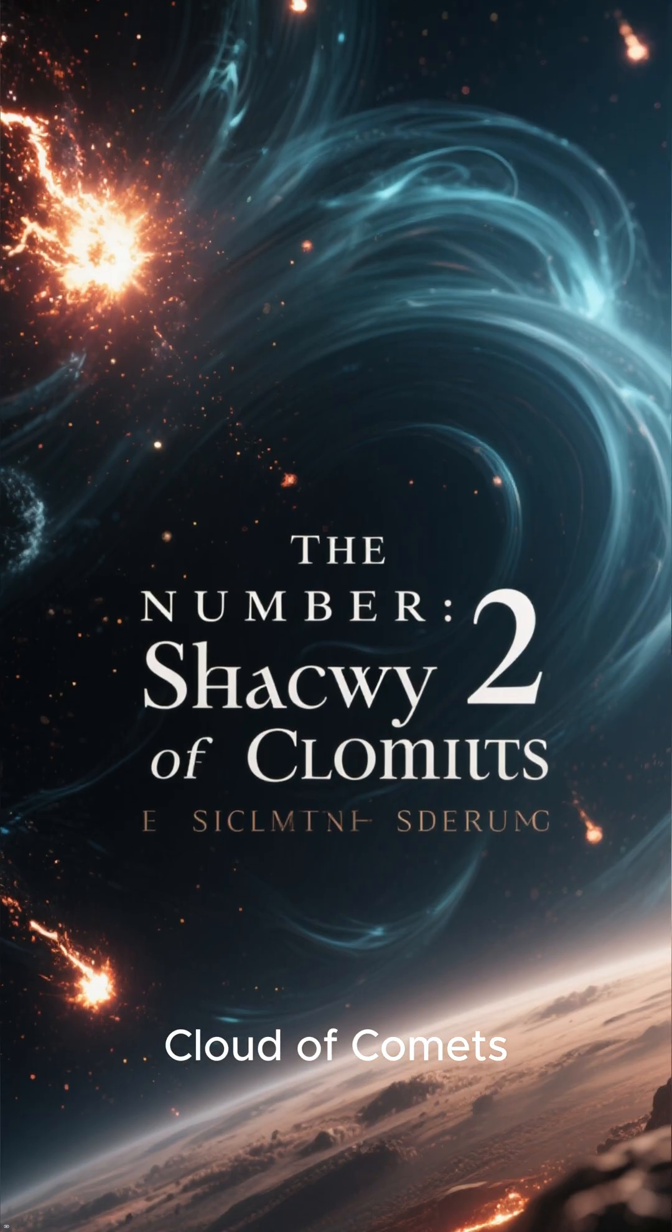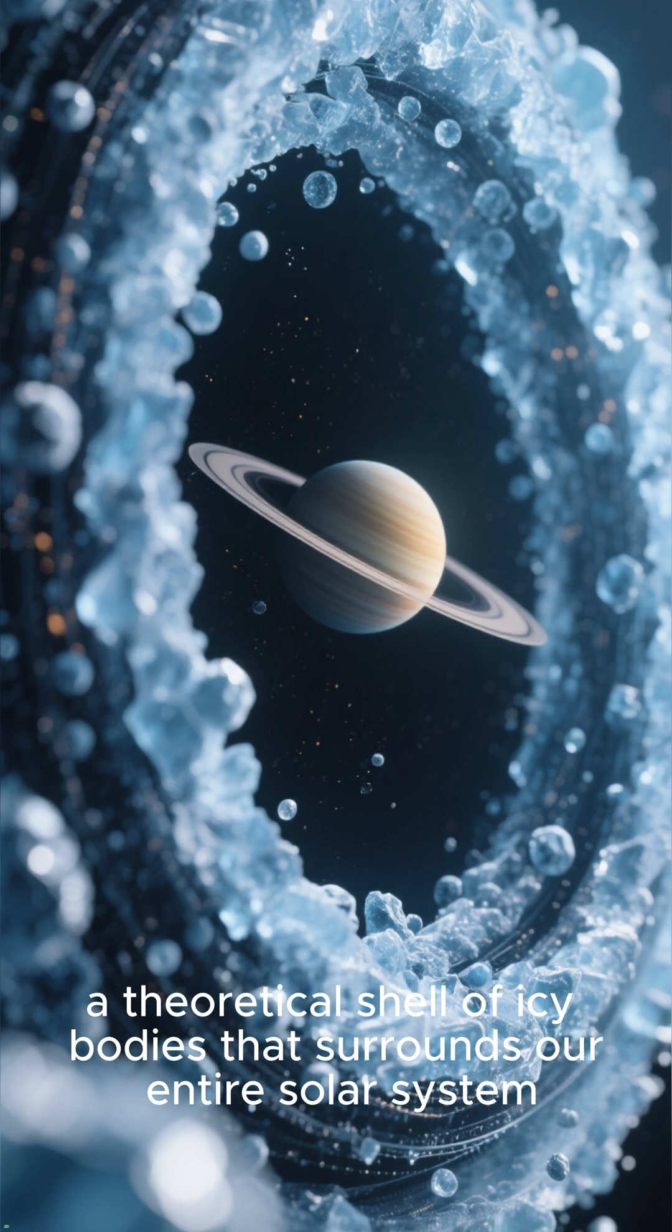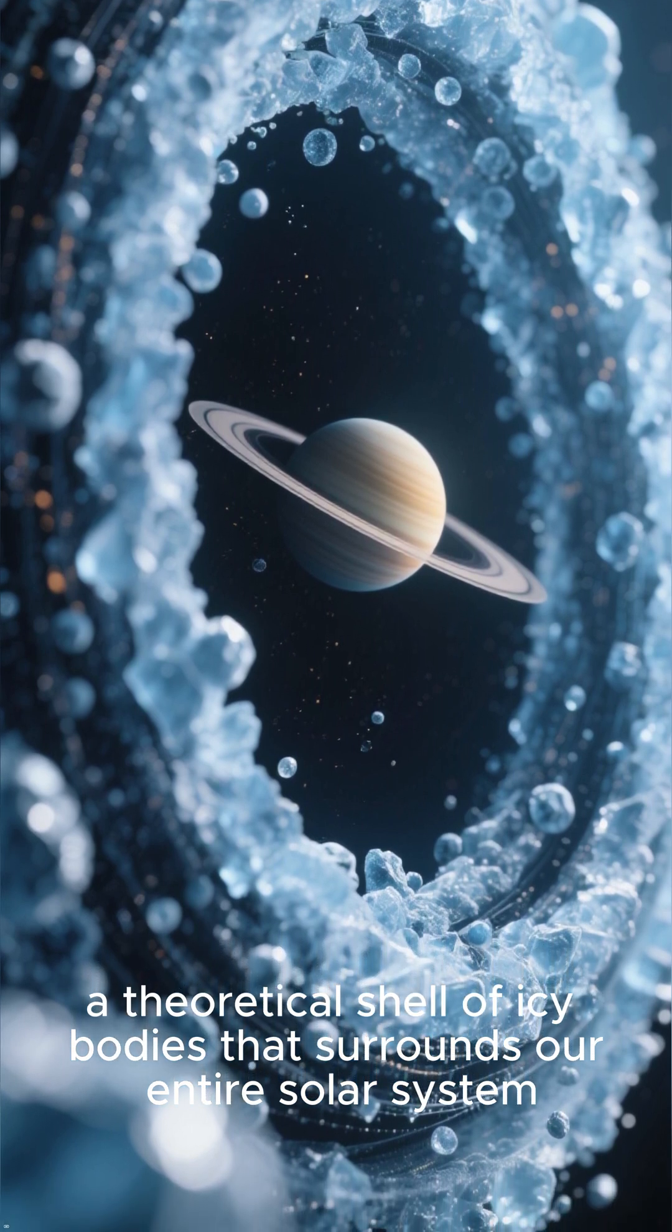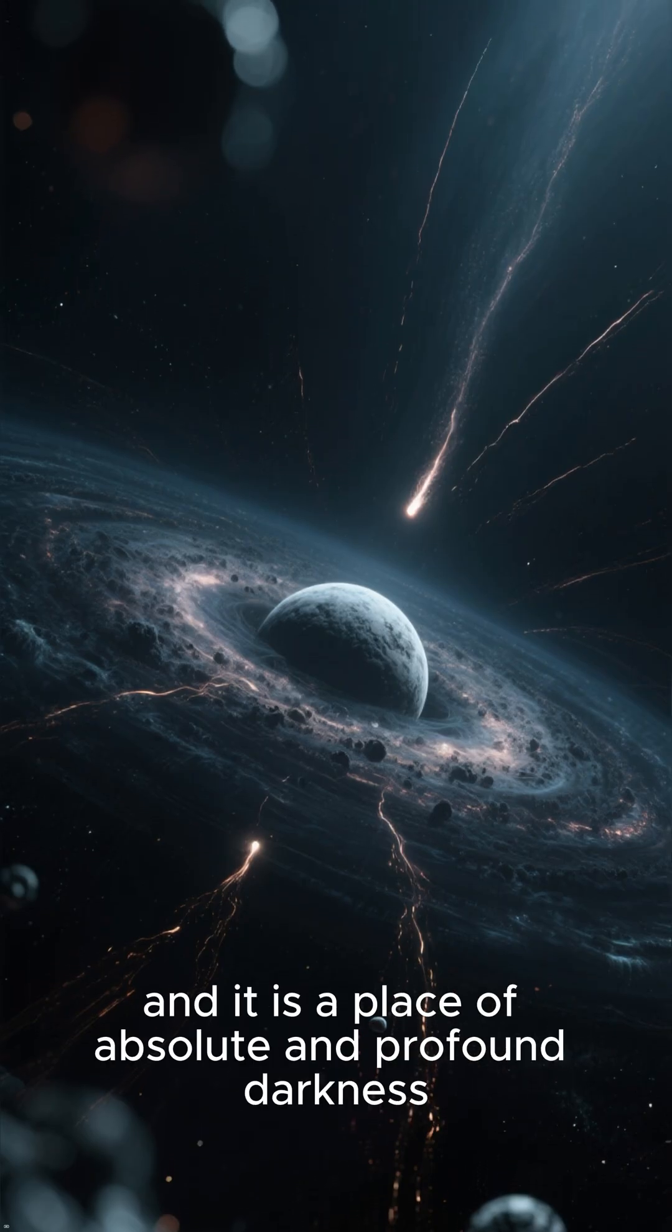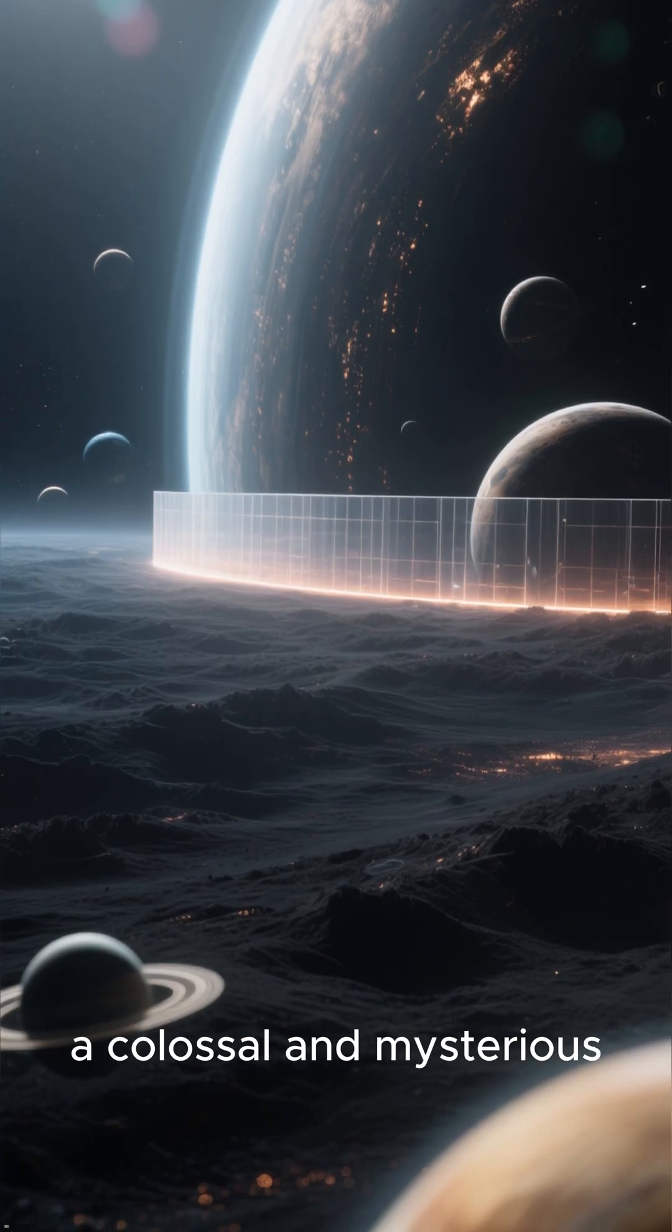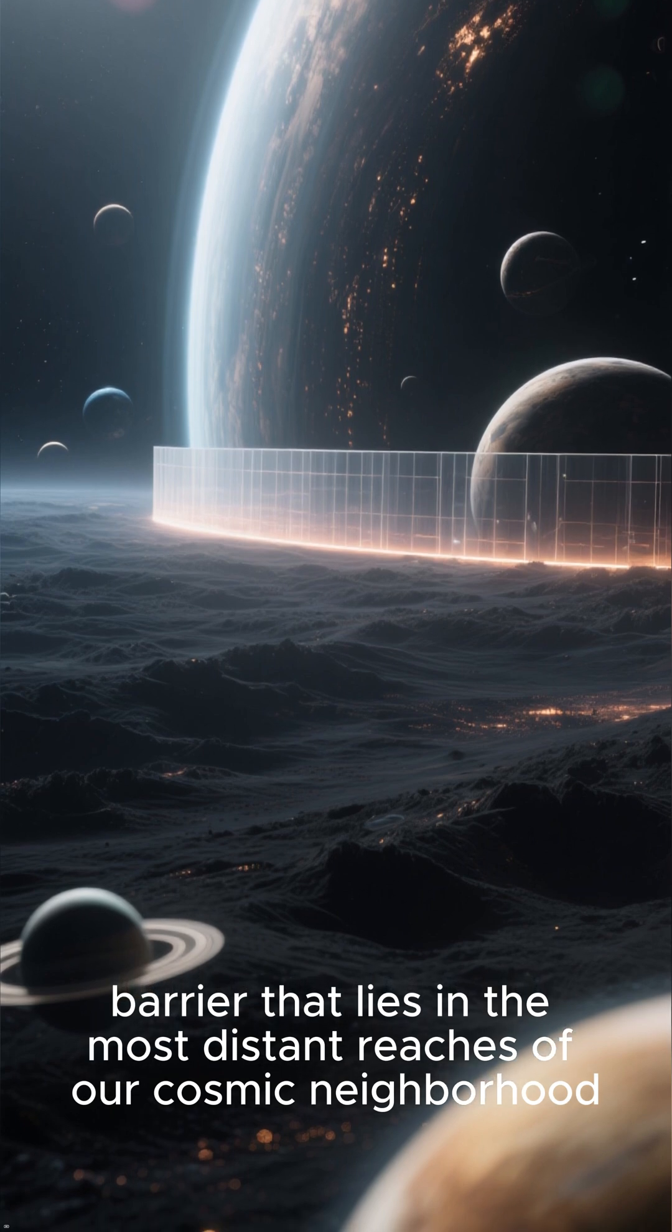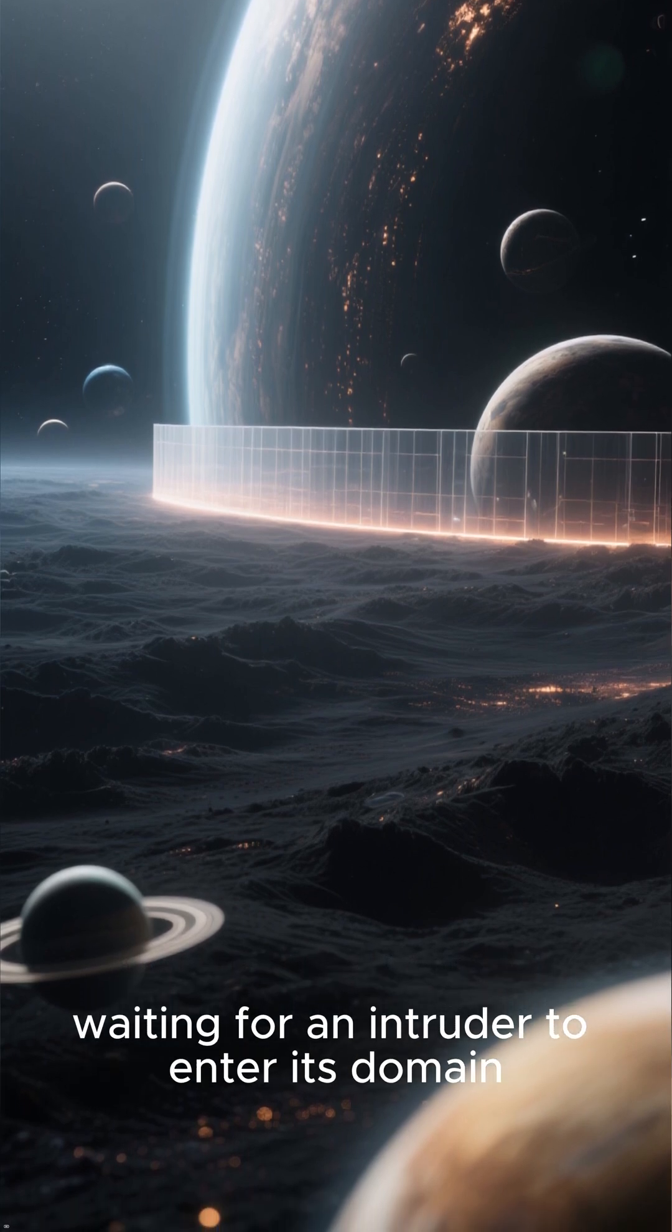Number 2: The Shadowy Cloud of Comets. The most unsettling mystery of all is the Oort Cloud. A theoretical shell of icy bodies that surrounds our entire solar system. This is where comets come from, and it is a place of absolute and profound darkness. It is an unseen shield, a colossal and mysterious barrier that lies in the most distant reaches of our cosmic neighborhood, waiting for an intruder to enter its domain.